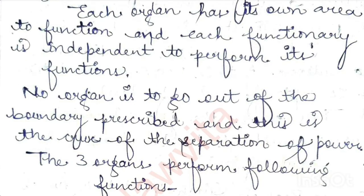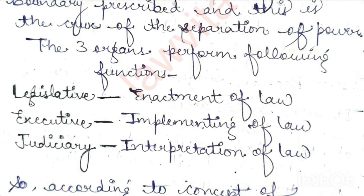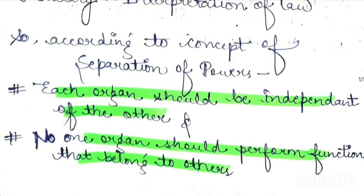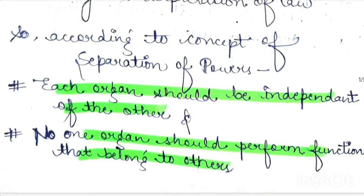The theory of separation of power is the principle that if any organ — whether Judiciary, Executive, or Legislature — they will not cross their boundaries. Each organ will not enter into another organ's role or create disturbance. This is what we call separation of power: all powers are separate and independent. The Legislature enacts law, the Executive implements law, and the Judiciary interprets law. Every organ is independent from the other and should not perform another organ's exclusive functions.